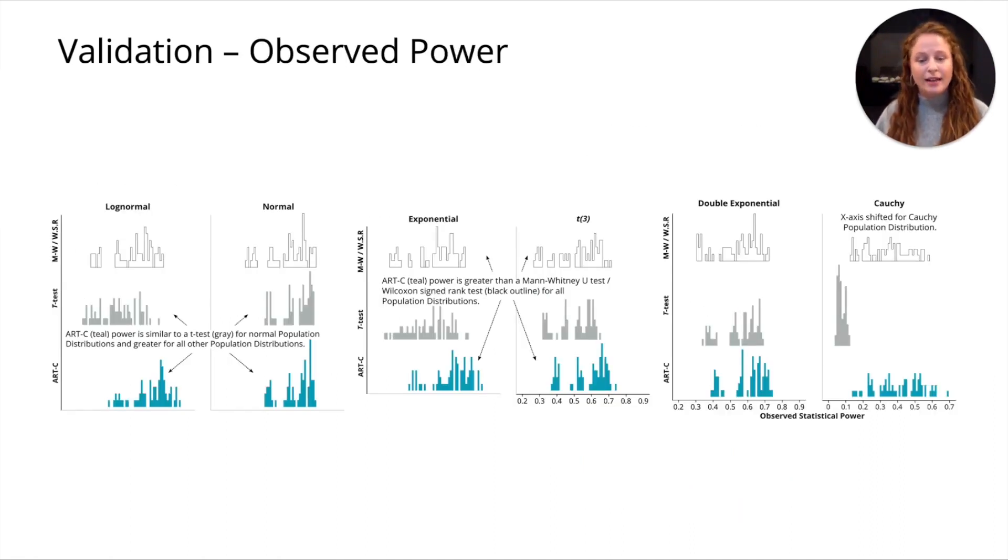We compared ART-C's statistical power again to a t-test. You can see in this figure, ART-C is in teal on the bottom. The t-test is in gray in the middle. We also compared to a Mann-Whitney-U test and a Wilcoxon-Sign-Rank test. Those are two really common non-parametric methods that are used. Mann-Whitney-U test for between subjects data and Wilcoxon-Sign-Rank test for within subjects data. Between all of the different population distributions, ART-C has higher power than the other methods. That's because the histogram is shifted to the right. Even a small difference really matters. If ART-C correctly finds a difference in 60% of the cases, and another method only finds a true difference in 40% of the cases, and you are using this to analyze your data for your experiment, that 20% difference actually really matters. We see that ART-C has low type 1 error rate, clustered around 0.05, and it has high statistical power.